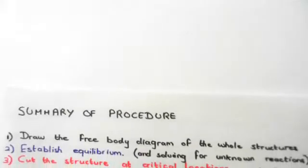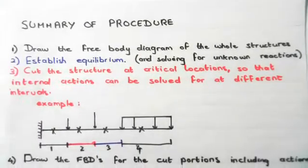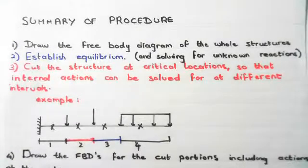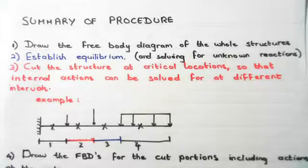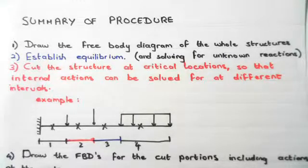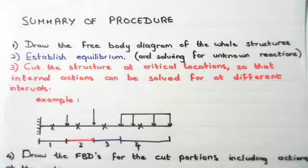Next, we have a summary of the procedure for bending moment diagrams. Initially, we draw the free body diagram of the whole structure. As previously established, free body diagrams are the most vital step in engineering to help visualize external forces. Secondly, we need to establish equilibrium using the sum of forces equals zero in horizontal and vertical directions, and the sum of moments about a certain point equals zero, provided the structure is statically determinate.